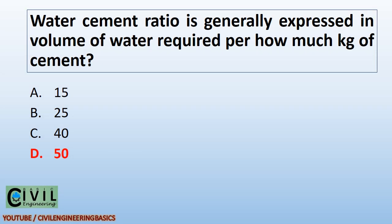Water cement ratio is generally expressed as the volume of water required per 50 kilograms of cement, i.e., per one bag of cement.